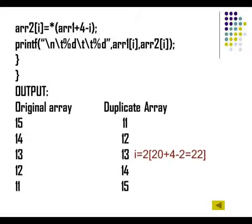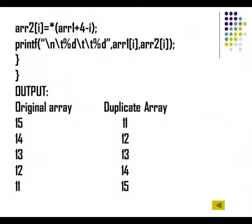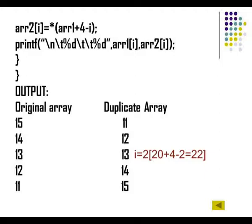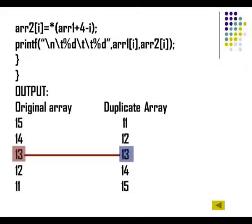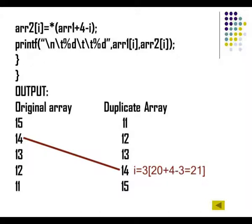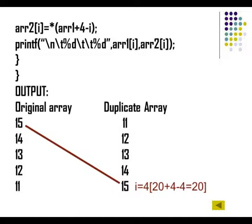In the next iteration, i becomes 2. Array2 of 2 — the third element of the duplicate array — should contain 13 from the reverse. So 20 plus 4 minus 2, meaning 24 minus 2 equals 22, and 13 goes to the third position. Then i becomes 3: 20 plus 4 minus 3 equals 21, so the element at address 21 gets copied to the fourth position of the duplicate array. Finally, during the last iteration, what is in the first position of array1 gets copied to the last position of array2.